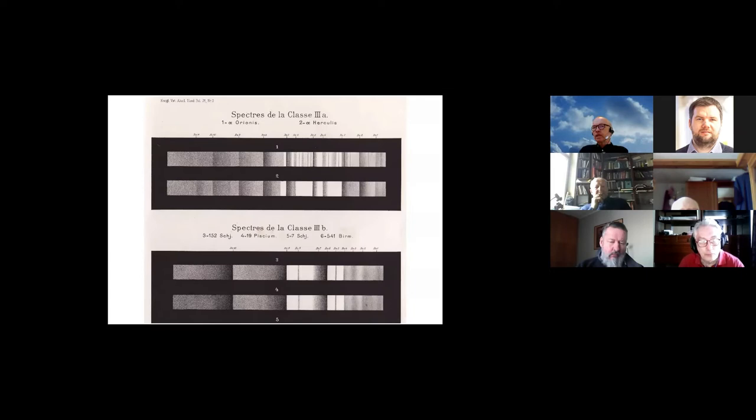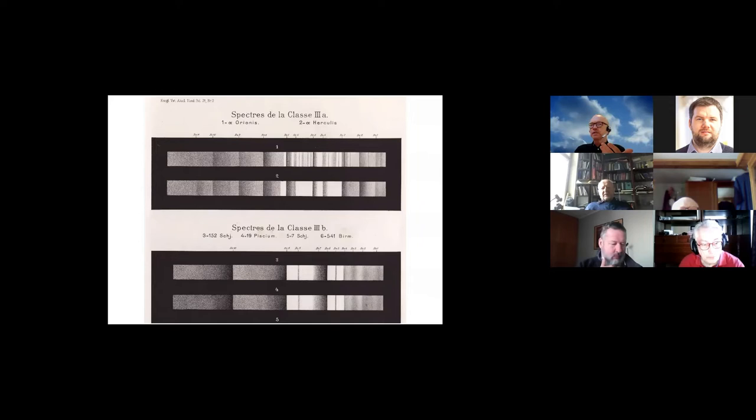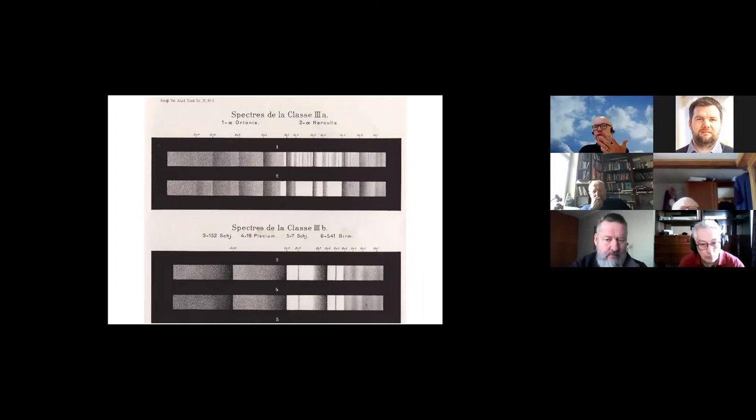So what are stars of the third class? This is a classification which is not used anymore, which at that time was introduced by Italian astronomer Secchi. Today we call them red giant stars or carbon stars. Here is a spectrum of Alpha Orionis, Betelgeuse. Some of these are carbon stars, that means they have a lot of absorption bands, molecular absorption bands. These are spectra where this is wavelength going from left to right, and this is the brightness of the spectrum and the absorption lines.